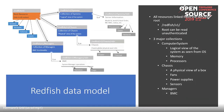Chassis is the physical view of the box — the sheet metal — with fans, power supplies, sensors, and power and thermal. System managers are in our case BMCs. There are links from all these different resources — for example, a 'managed by' link from the computer system to the manager, and one the other way as well.